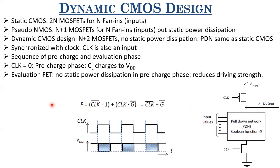When you want the output to discharge, the evaluation transistor comes in series with the overall pull-down network. This reduces the driving strength of the pull-down network because you have a resistance in series. Even if the MOSFET is turned on, it offers some resistance. So effectively, the driving strength of the pull-down network is reduced because of the evaluation transistor. But it is necessary for functionality — so that the output doesn't get discharged in the pre-charge phase.